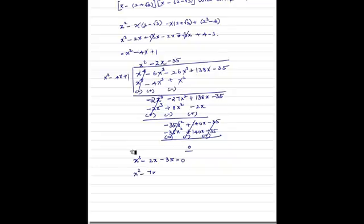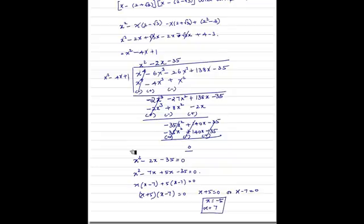Factorizing: x squared minus 7x plus 5x minus 35 equals 0, so x(x minus 7) plus 5(x minus 7) equals 0, giving (x plus 5)(x minus 7) equals 0. Therefore x equals minus 5 and x equals 7. These are the other two roots.